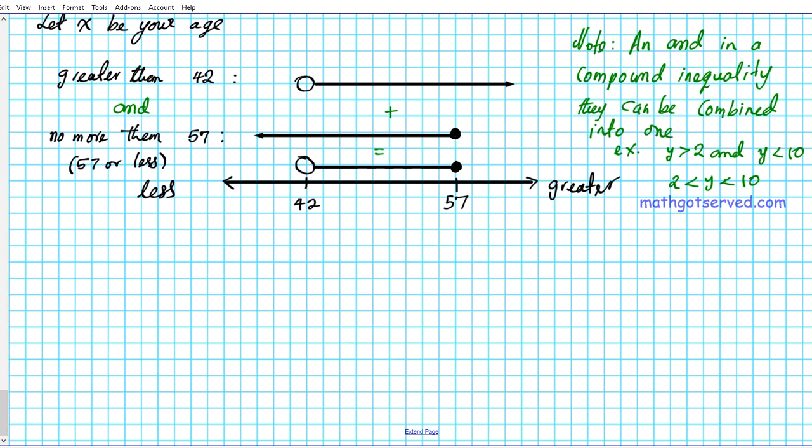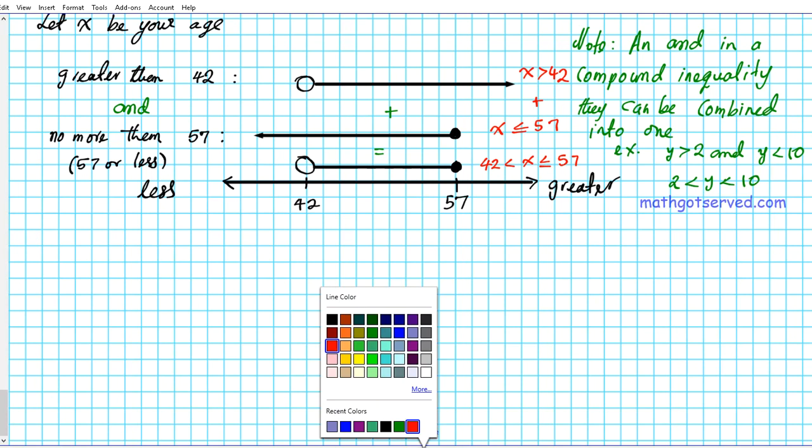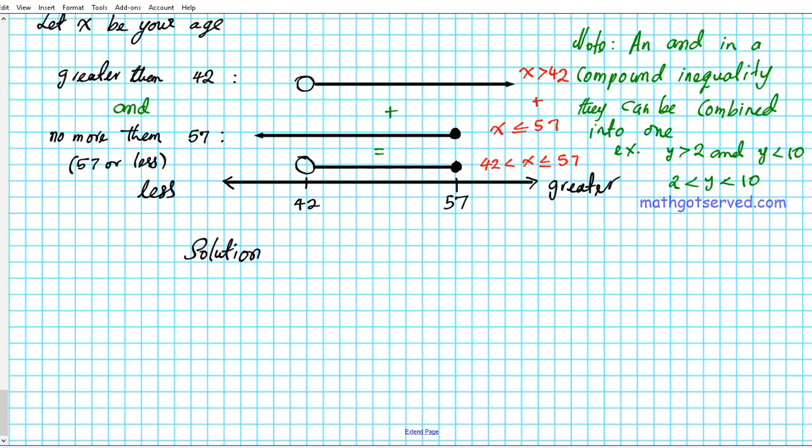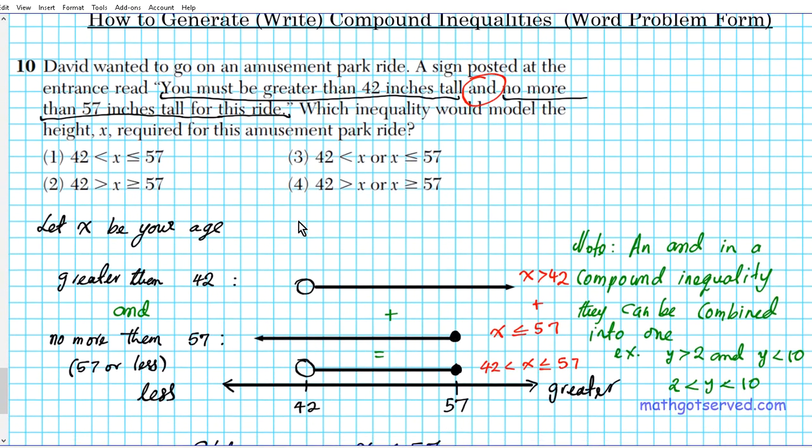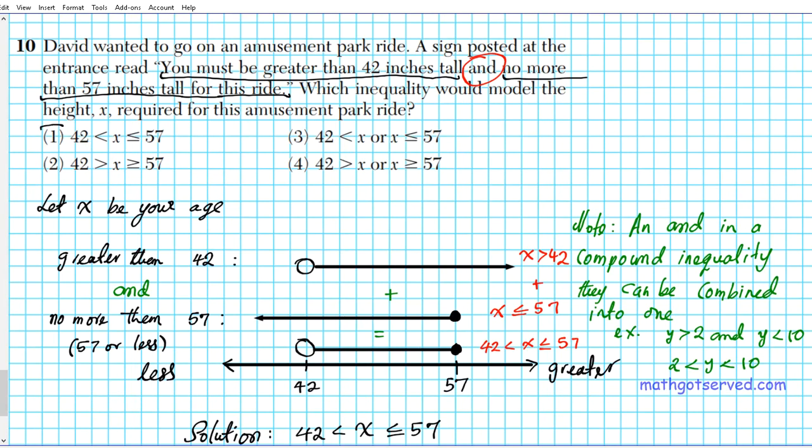So this is the resulting inequality right here. This inequality is 42 less than x and x is less than or equal to 57. The top one, this inequality is x is greater than 42. This inequality right here is x is less than or equal to 57. Now we combine these two together, x is greater than 42 and x is less than or equal to 57. You end up with 42 is less than x and x is less than or equal to 57. So that is what our final answer is. The correct answer to question number 10 is option number one.